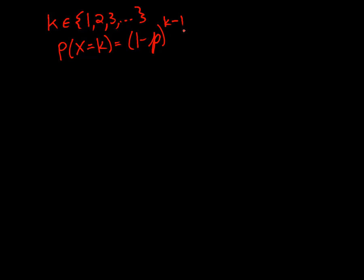That's the probability that the event did not occur in the first k minus 1 trials times p, the probability that it did occur on that last kth trial. And we've seen that the expectation of a geometric random variable is 1 over p.